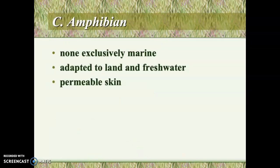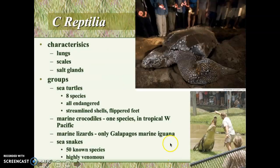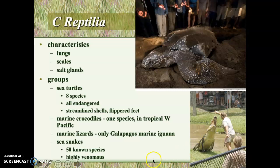There are no amphibians in the ocean because they have permeable skin and osmosis would dehydrate them — so no frogs in the ocean. But we do have reptiles: sea turtles and marine crocodiles. Marine lizards and sea snakes are not included in this slide presentation.